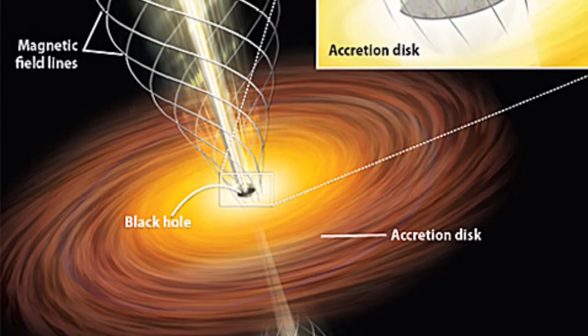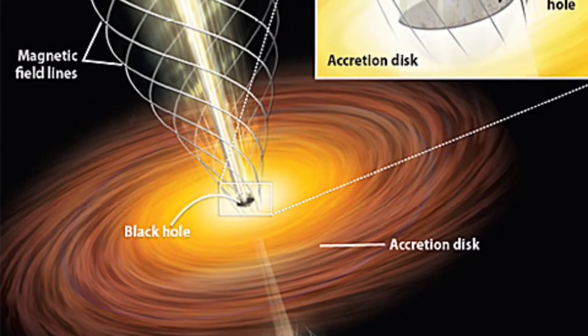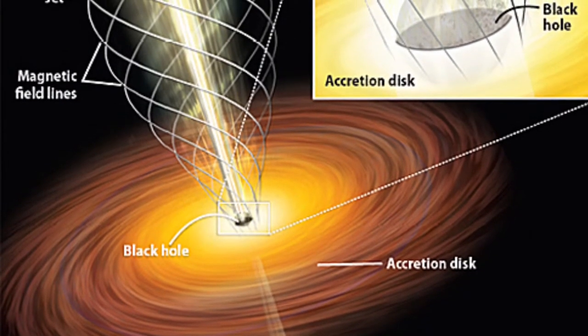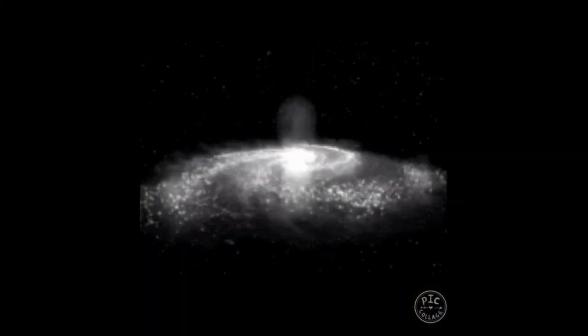As the surface of the star nears an imaginary surface called the event horizon, time stands still and the star can collapse no more. It is a frozen collapsing object.